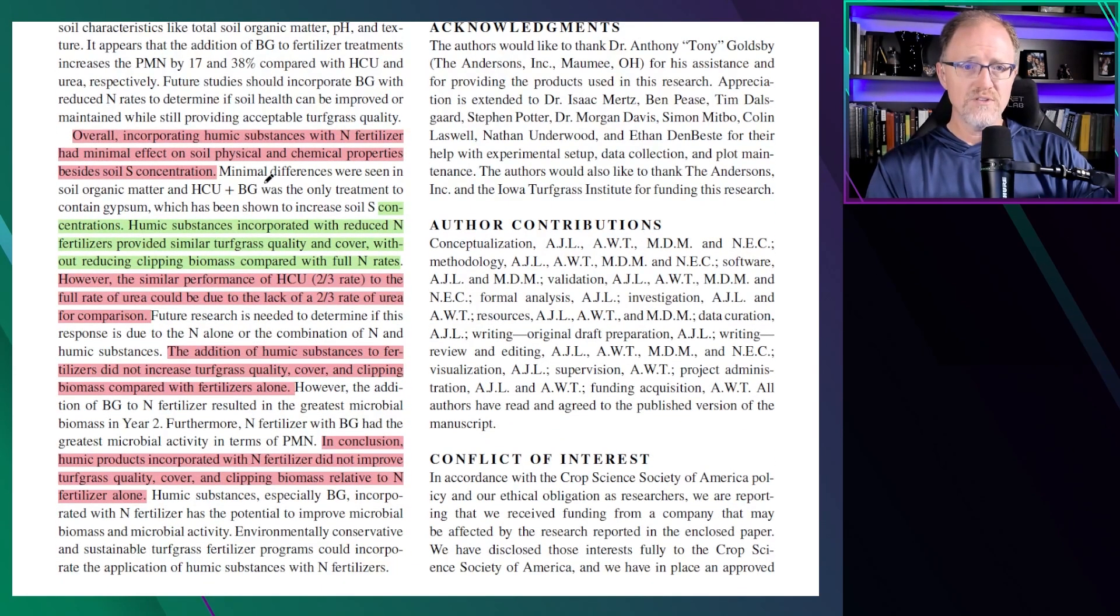In conclusion, incorporating humic substances with nitrogen fertilizer had minimal effect on soil physical or chemical properties besides the sulfur. Humic substances incorporated with reduced nitrogen fertilizers provided similar turfgrass quality and cover without reducing clipping biomass compared with the full rates of nitrogen. However, the similar performance of humic-coated urea to the full rate of urea could be due to the lack of a two-third rate of urea comparison. In other words, they did not include a two-thirds rate of nitrogen without the humic.